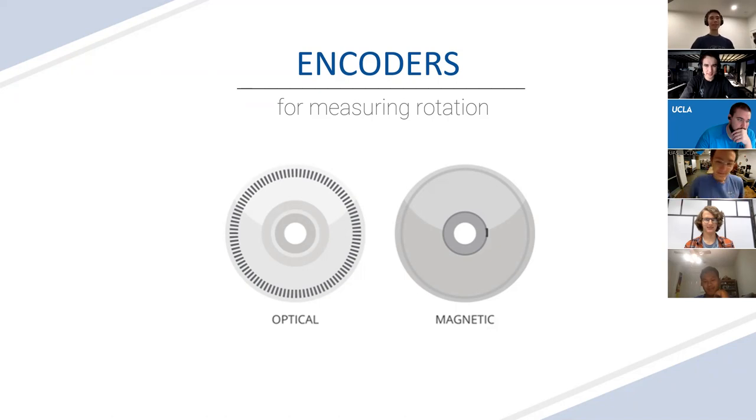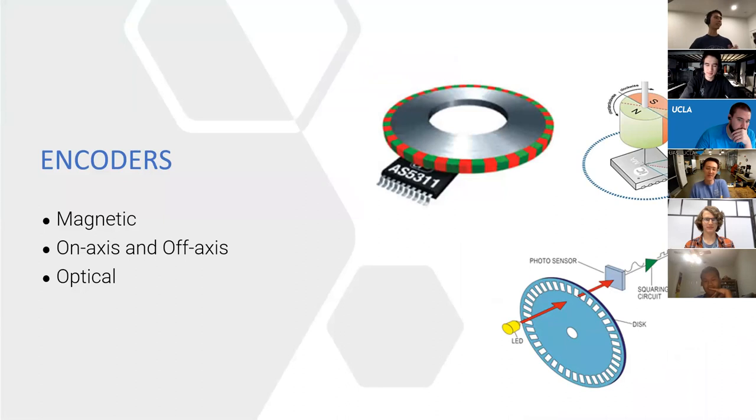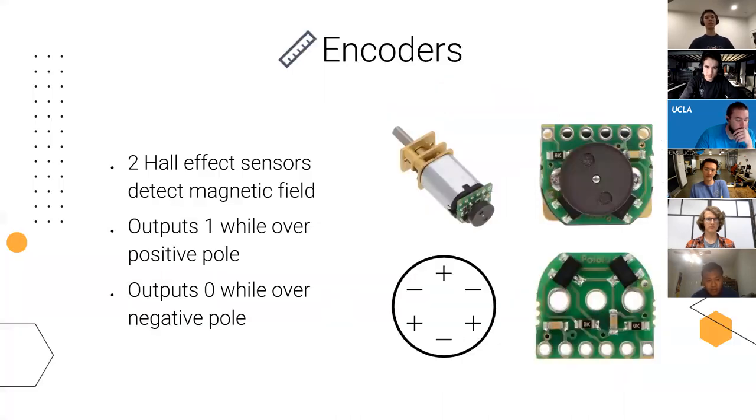Just some background on the types of encoders that are out there. You have both magnetic and optical encoders. Those are the two main types. Magnetic ones use a magnet, optical ones shine a light through a hole and it measures how many times that blinks. You also have on-axis and off-axis encoders. That's pretty much what it sounds like, whether it measures the poles on the axis of rotation or off the axis of rotation. On the left is an off-axis one. On the right is an on-axis one. Basically what you need to know is our encoder we use is an off-axis one that has two sensors.